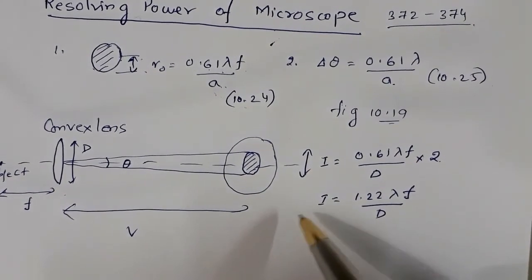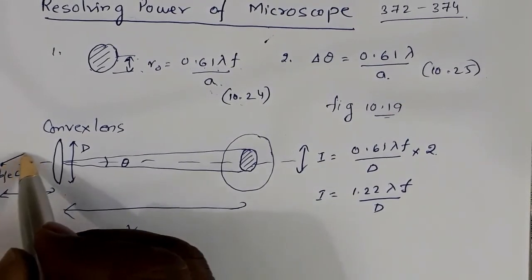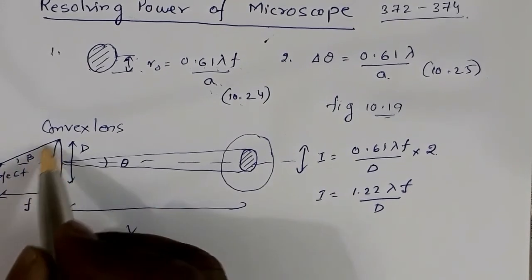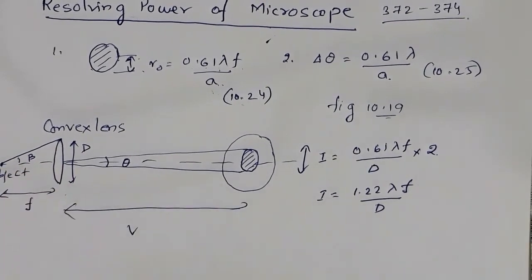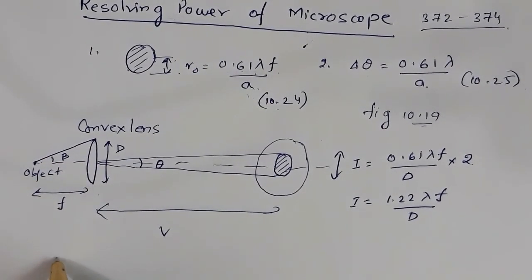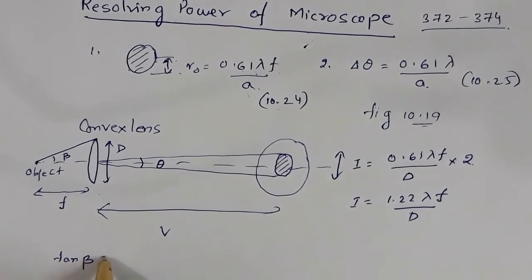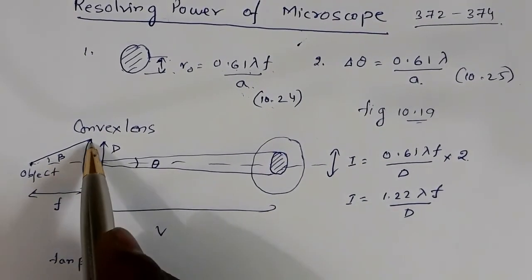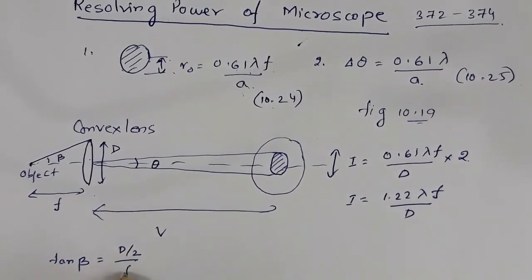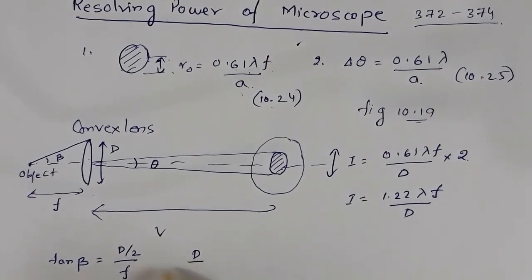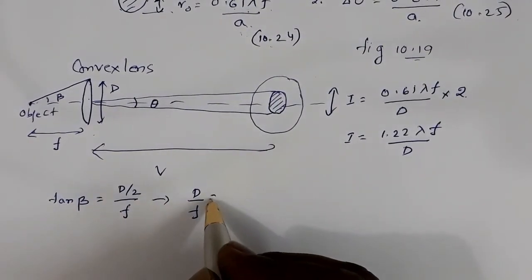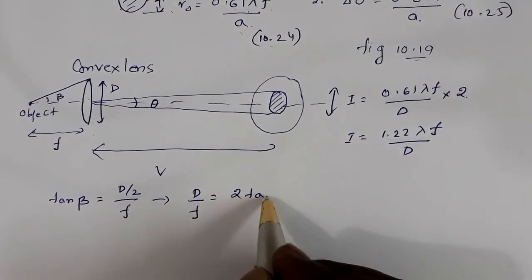Now let this angle be beta, so the total angle is 2β. From the triangle, tan β = (D/2)/f. This implies D/f = 2 tan β.